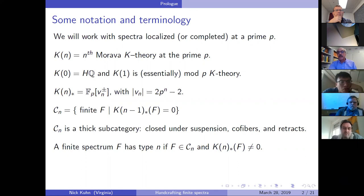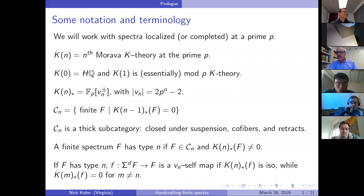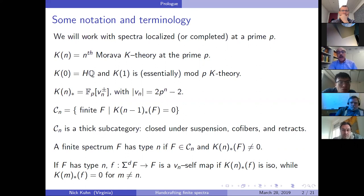A finite spectrum is called type n if it is K(n−1)-acyclic but nonzero in K(n). Another beautiful concept is a v_n self map: a map from some suspension of F to itself that induces an isomorphism on K(n). This is the source of non-nilpotent maps, because you can iterate it and it remains an isomorphism and is never zero.